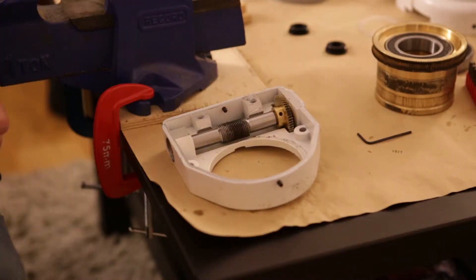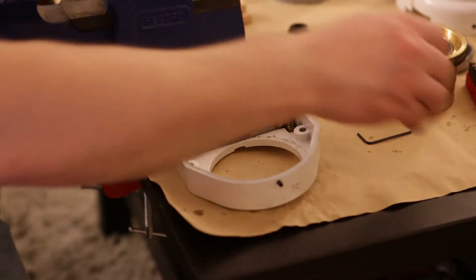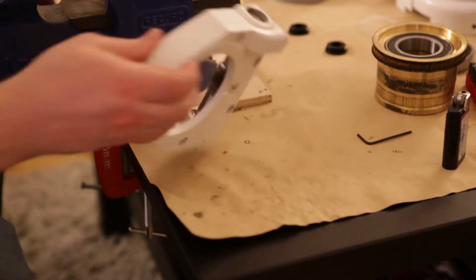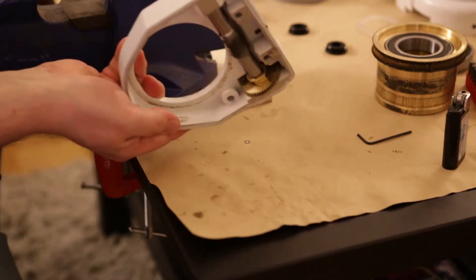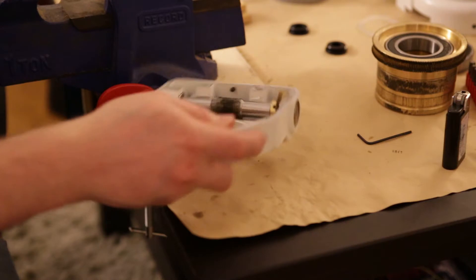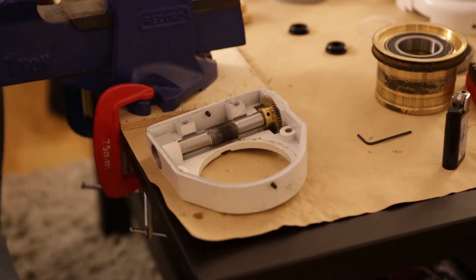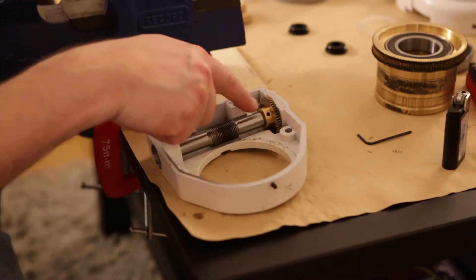So I've got my vise back on the table. And I already went in and removed the caps, just like the other ones on the RA axis. And before I go any further I'm going to have to loosen those grub screws on the gear.